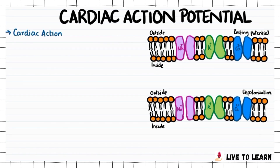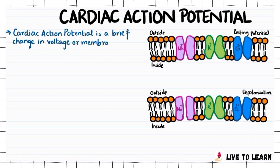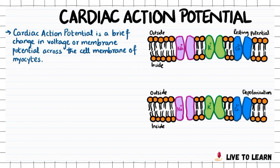The cardiac action potential is a brief change in voltage or membrane potential across the cell membrane of myocytes. This is brought on by the flow of charged ions through ion-channel proteins.